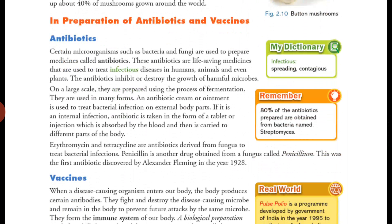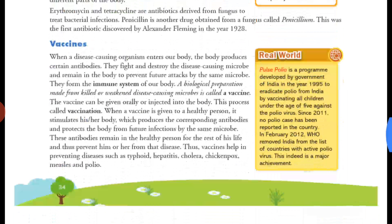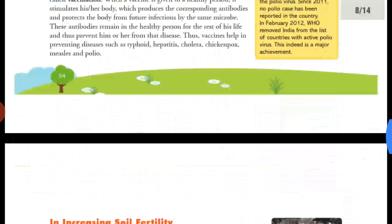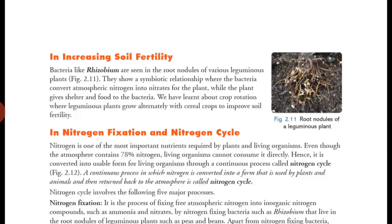We covered how penicillin was discovered by Alexander Fleming. Then we moved to vaccines — what vaccination means, how vaccines are prepared, and diseases for which vaccination is provided in childhood, such as typhoid, hepatitis, polio, and measles. We also started an introduction to how microorganisms help in increasing soil fertility.